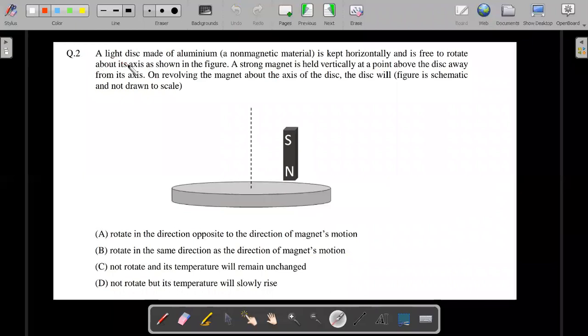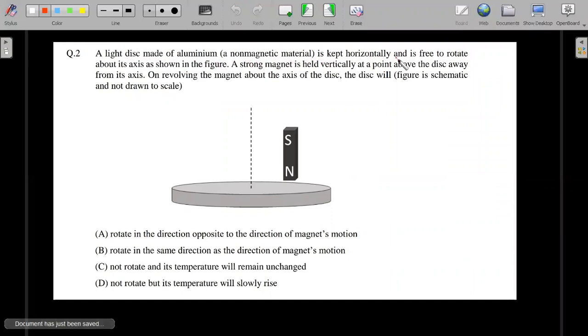A light disc made of aluminum, a non-magnetic material, is kept horizontally and is free to rotate about its axis as shown in the figure. A strong magnet is held vertically at a point above the disc away from its axis. On revolving the magnet about the axis of the disc, the disc will: rotate in the direction opposite to the magnet's motion, rotate in the same direction as the direction of magnet's motion, not rotate and its temperature will remain unchanged, and not rotate